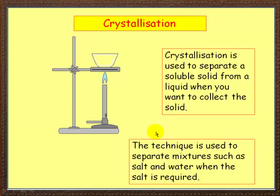Now suppose you want to separate a solid from a liquid, but you don't want the liquid — you just want the solid. For that we could use crystallization. Crystallization is used to separate a soluble solid from a liquid when you want to collect the solid. The technique is used to separate mixtures such as salt and water when the salt is required. This is an evaporating basin or crystallization dish. You heat it, the water gets driven away, and before it's all gone you take the Bunsen burner away and leave it to cool. The last bit of water will evaporate and you'll be left with sometimes some very beautiful crystals.